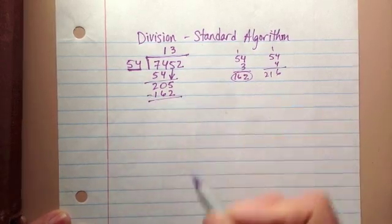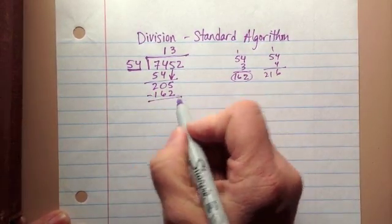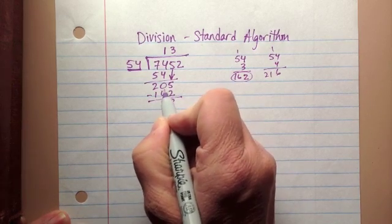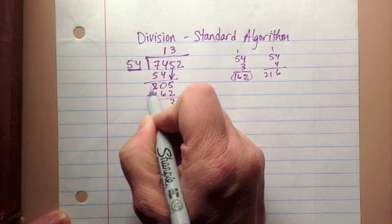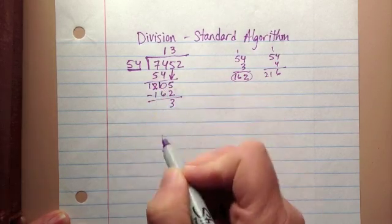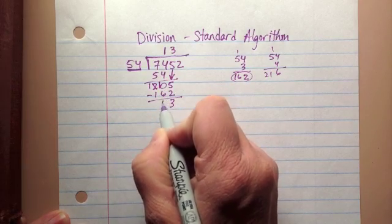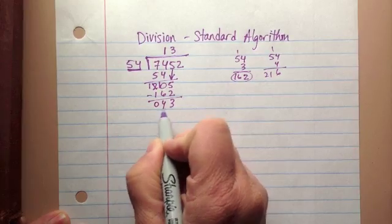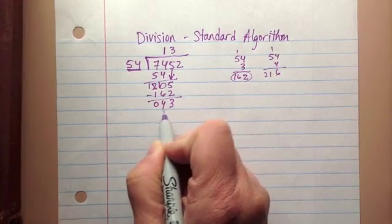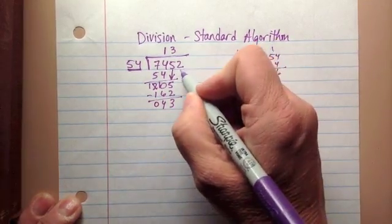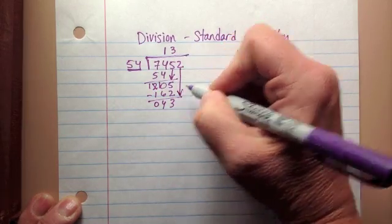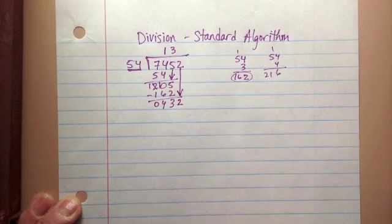162 is close to 205 — it's about 40 away, which is less than 54. So I know that 54 times 4 would be too many; 4 times 4 is 16, 4 times 5 is 20, plus 1 is 21, giving 216, which is more than 205. So I place 3 up here. 3 times 54 is 162. Subtracting: 5 minus 2 is 3, I can't do 0 minus 6 so I borrow — 10 minus 6 is 4, and 1 minus 1 is 0. I have 43 left over, so I need to go to the next digit.